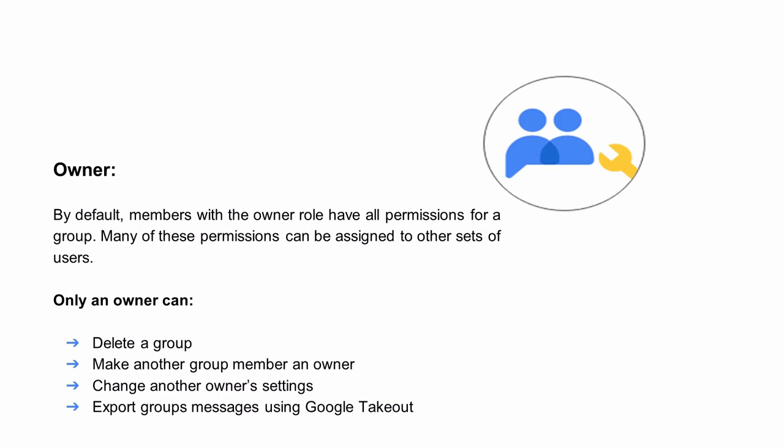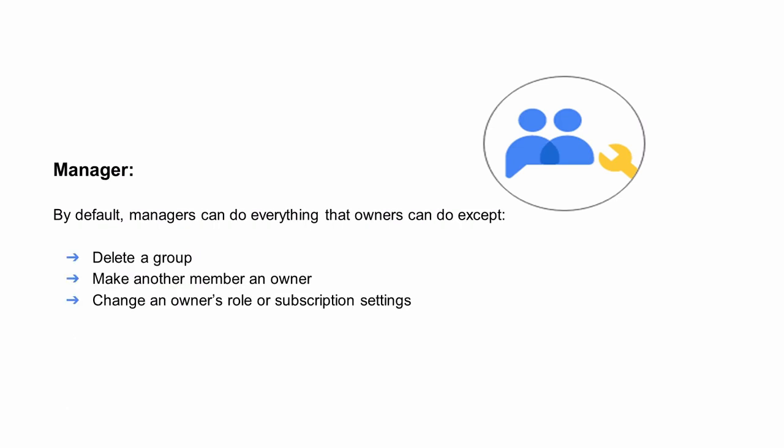An administrator can remove post permissions or add, invite, or approve new members, but cannot remove the ability to view members or conversations or contact other owners. A group can't be an owner of another group. Administrators are automatically assigned the owner role for all groups in an organization, including groups that users create. Assigning someone the owner role gives them the greatest control over the group, so I recommend keeping the number of owners low. By default, managers can do everything that owners can do except: delete a group, make another member an owner, or change an owner's role or subscription settings.